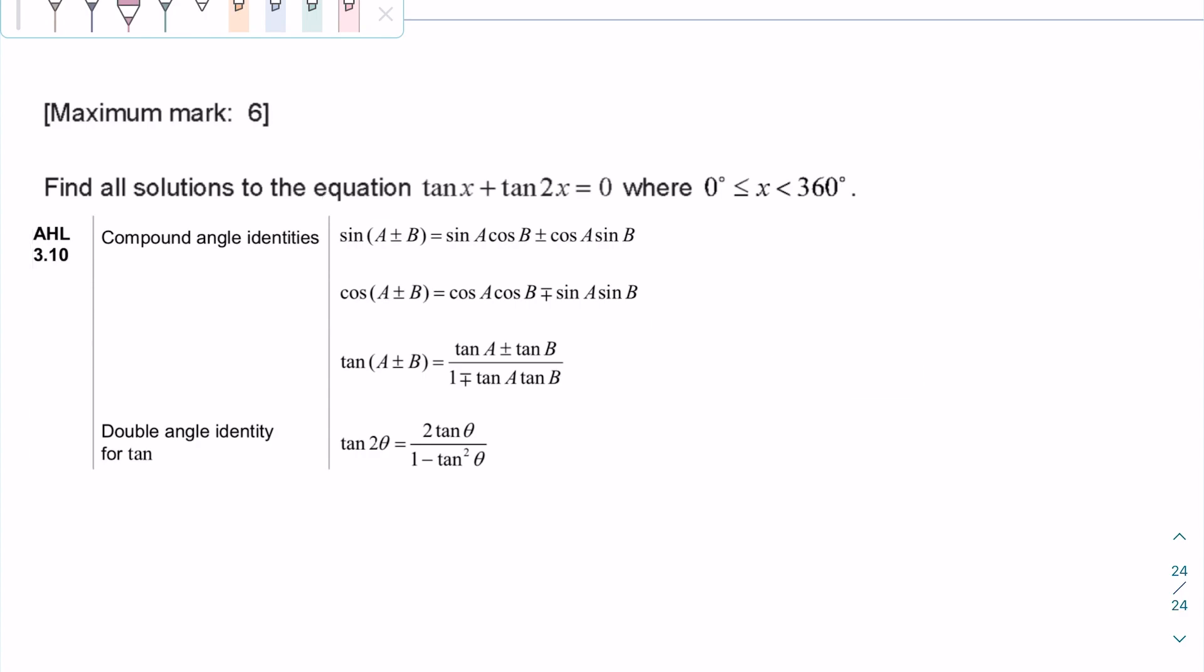To start simplifying this, we can simplify the double tan angle. We can use the double angle identity for tan in the HL section of the formula booklet on page 7.